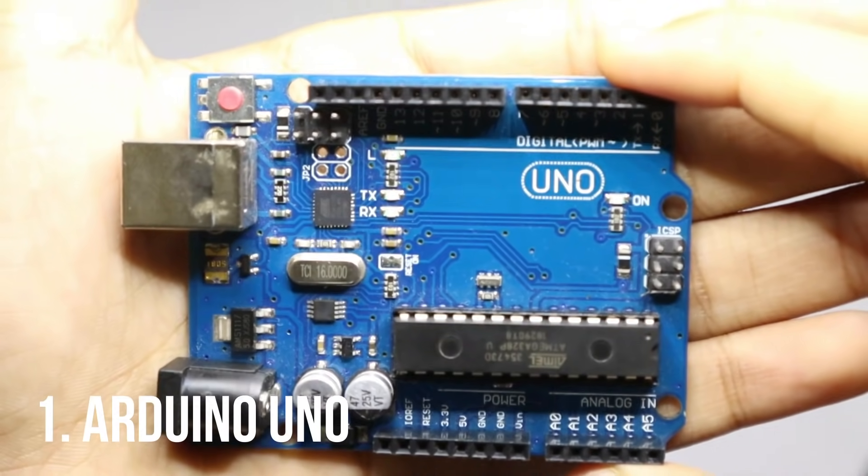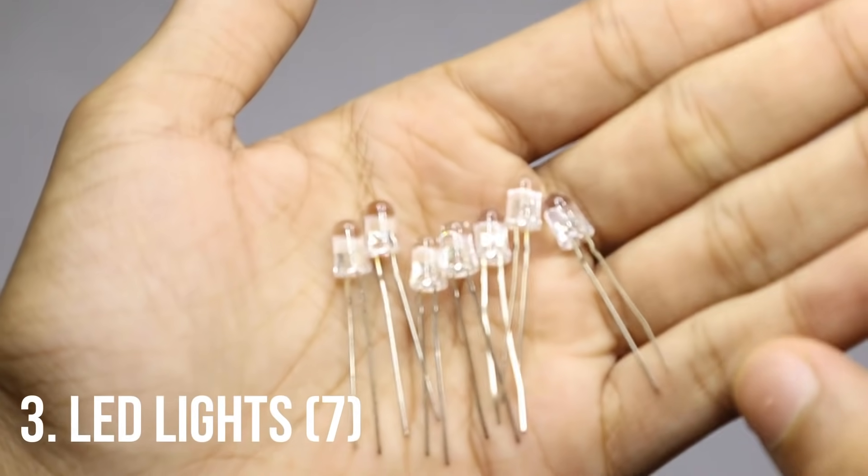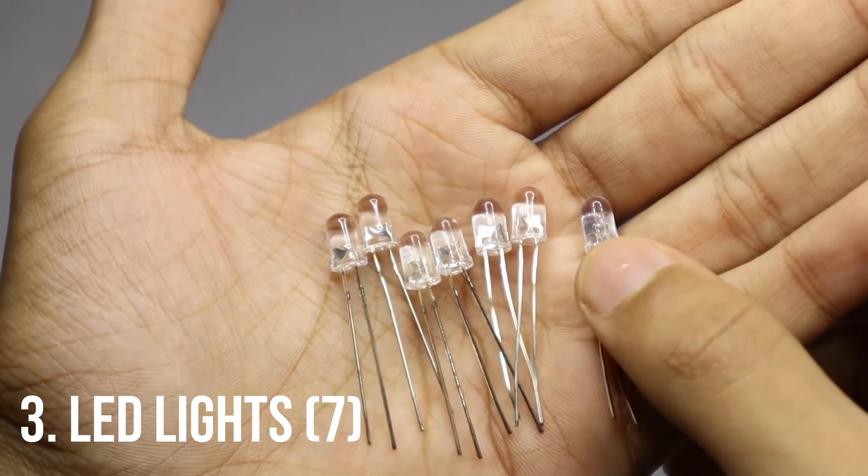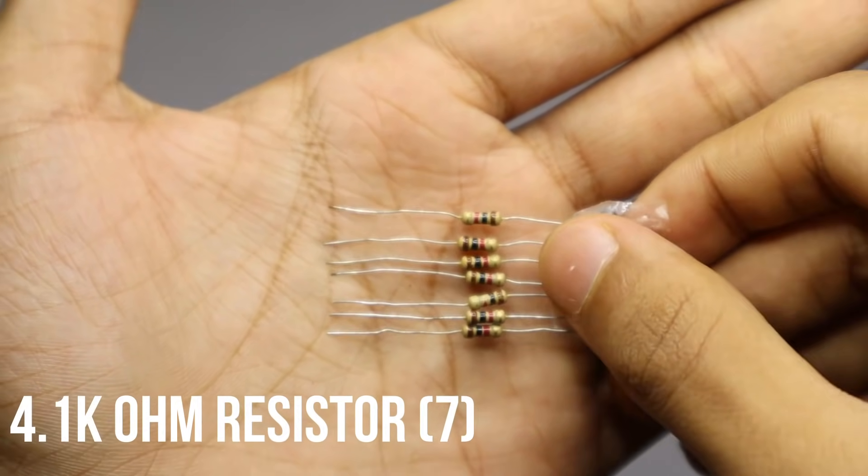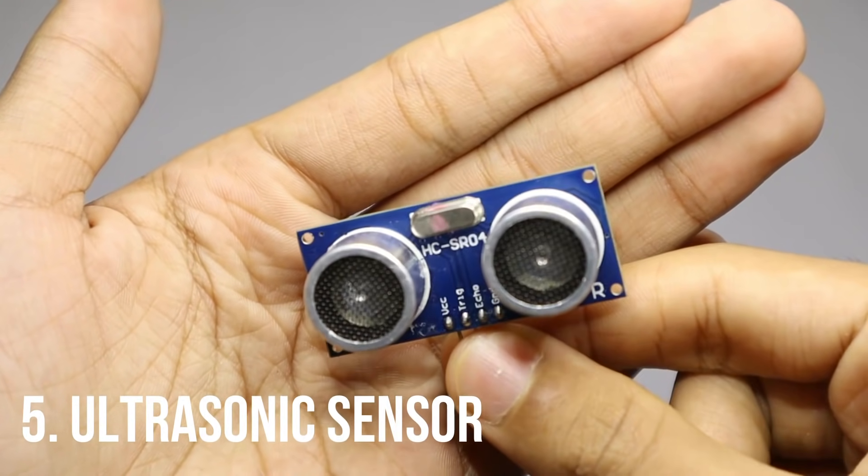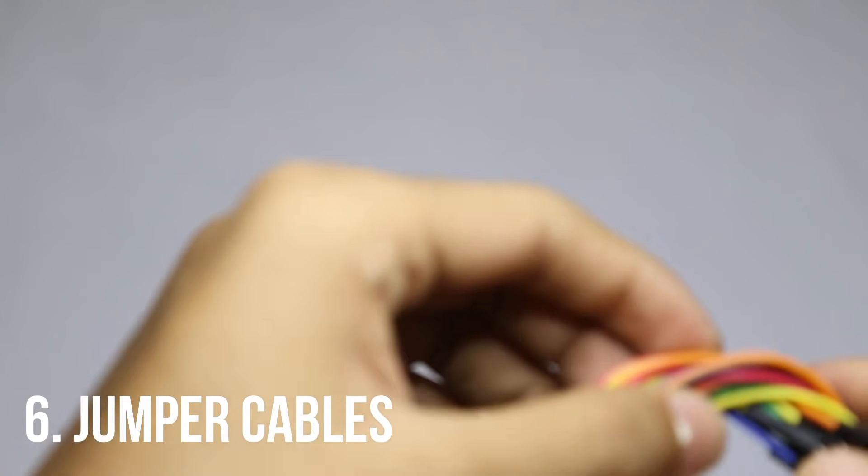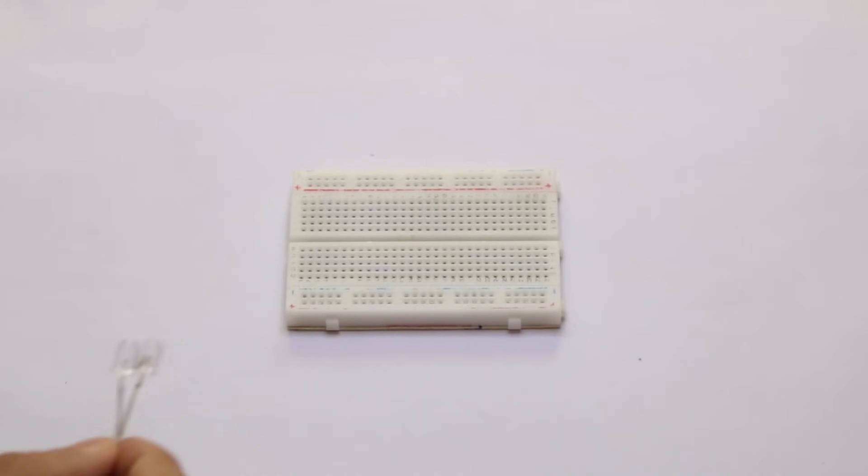To make the LED distance indicator you will need: Arduino Uno, a breadboard, 7 LEDs, 7 1k ohm resistors, an ultrasonic sensor, and some jumper cables.